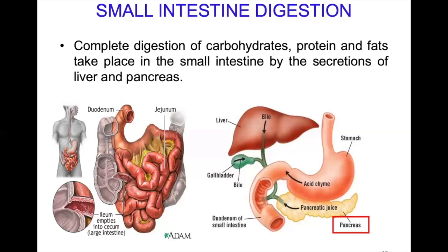The small intestine is divided into three parts. The first part is the duodenum — a C-shaped part nearly 20 to 25 centimeters in length. In the small intestine, two processes take place: digestion occurs in the duodenum, and absorption of food takes place in the jejunum and the ileum.